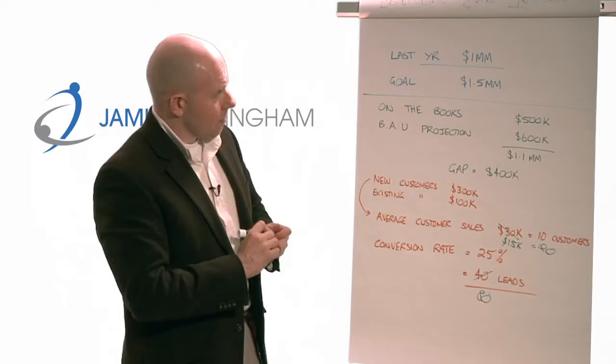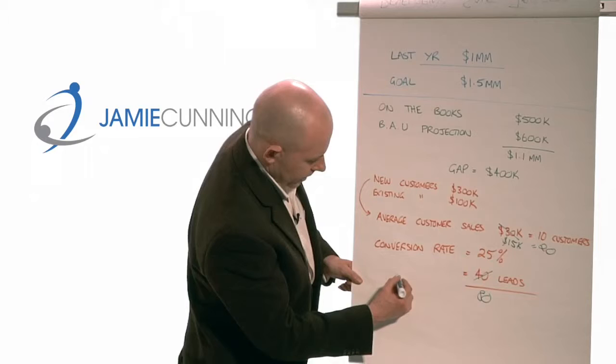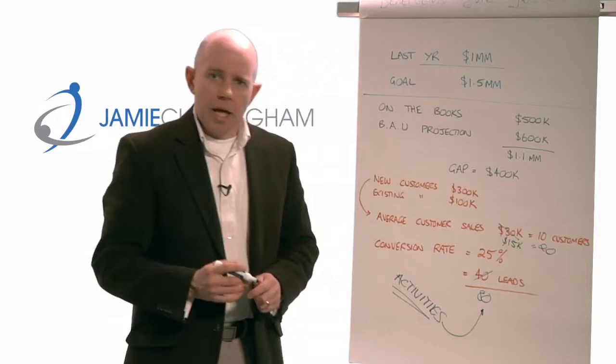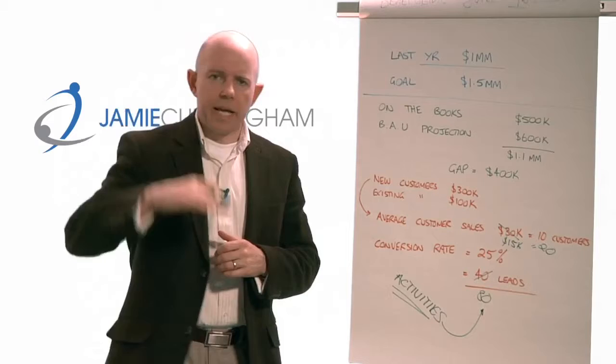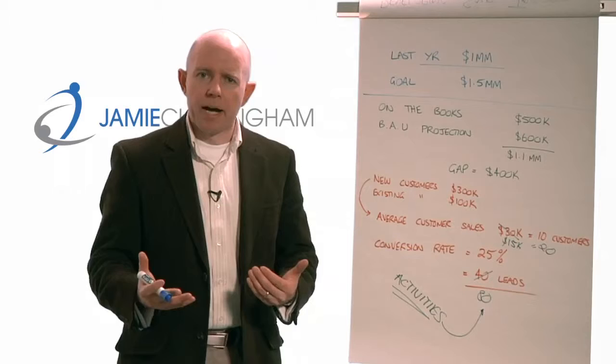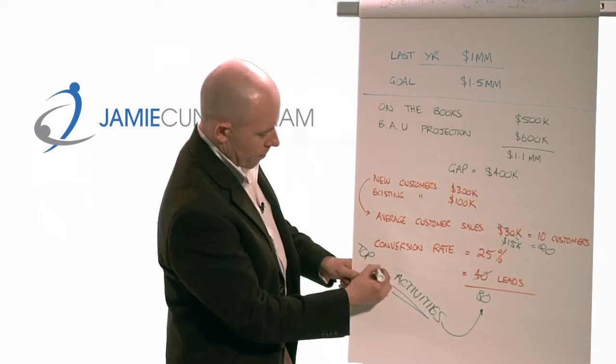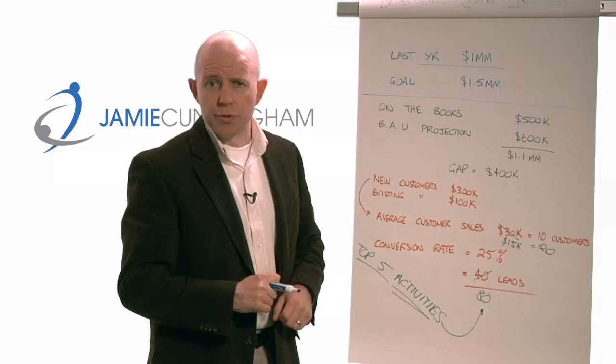The next step is: we understand how many leads we have to generate, so now we look at what are the activities we do to generate leads. This is getting into creating some of your critical drivers. If we can break out what the activities are that generate leads, we can start to develop benchmarks around what quantity of those activities have to happen and by when. If you've got a sales team in place, there's nothing more powerful than knowing your top five activities that generate leads and knowing how much of each should happen over what time frame.